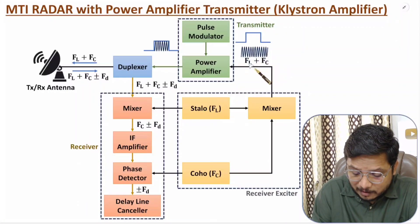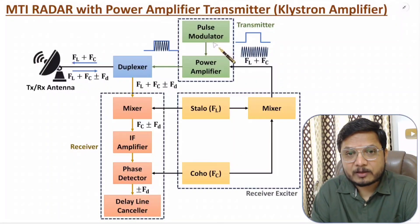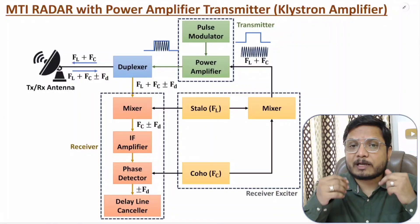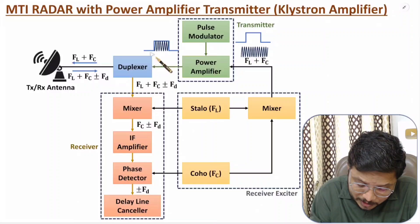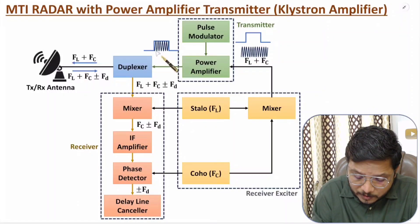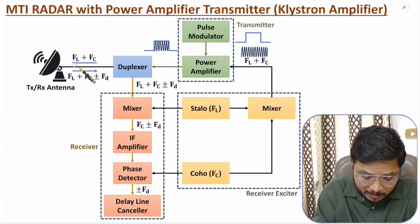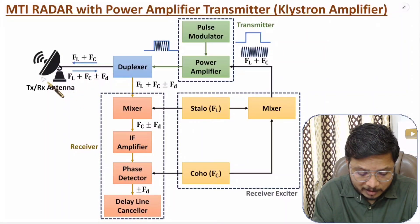The input signal to the power amplifier is FL plus FC, generated by the mixer. This high-frequency RF signal is amplified by the power amplifier during the short duration of a pulse as controlled by the pulse modulator. So for a short duration, the power amplifier produces a high power signal with RF frequency FL plus FC.